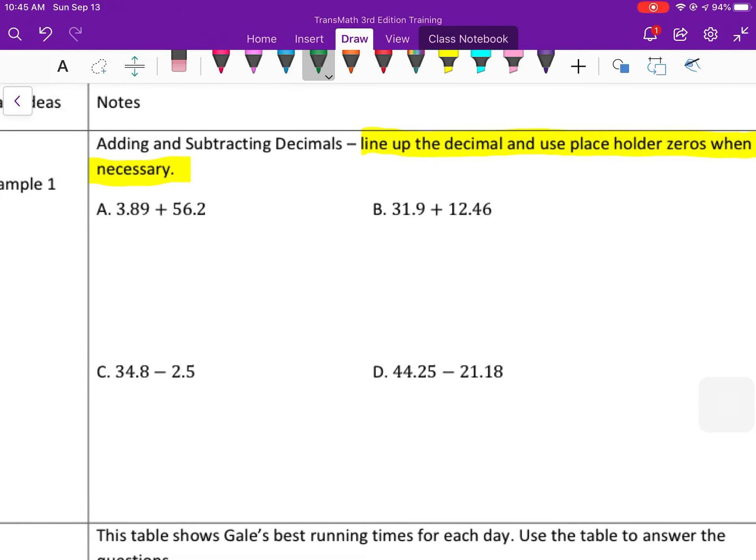So first you're going to start by lining up the decimals. We have 3.89 plus 56.2. So notice that I've lined up the decimals. That's a key step to adding decimals. And then whenever you have an open space here, you're going to add in a placeholder of zero. And then you add starting from the right to the left. So you start with 9 plus 0 is 9. 8 plus 2 is 10, so you must carry the 1. Then we have 6 plus 3 is 9, plus 1 more is 10. So carry the 1 again. 5 plus 1 is 6. And then for your final answer, you bring the decimal point straight down. So 60.09 is your final answer, or 60 and 9 hundredths.